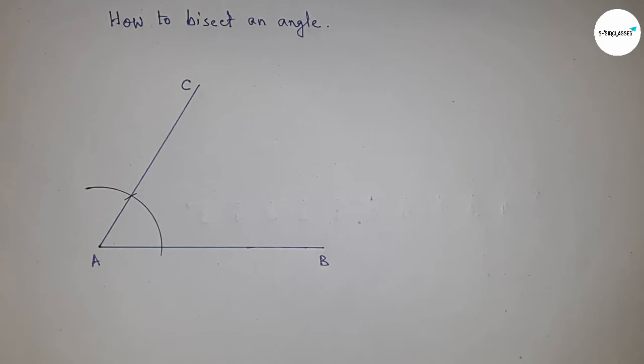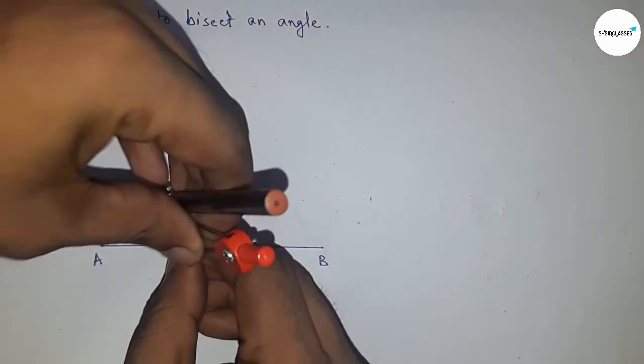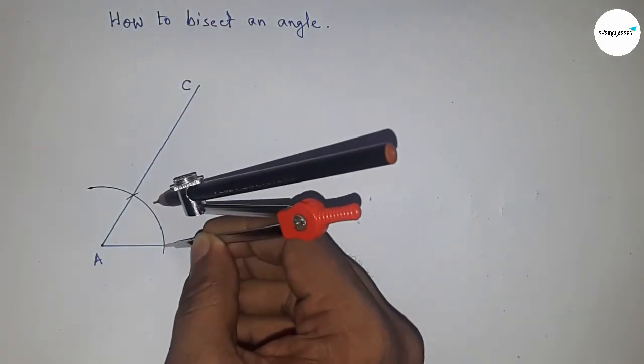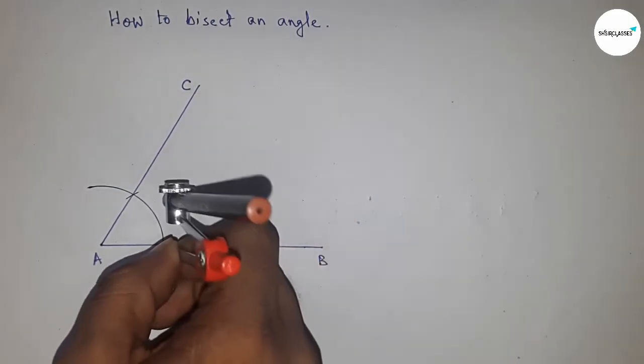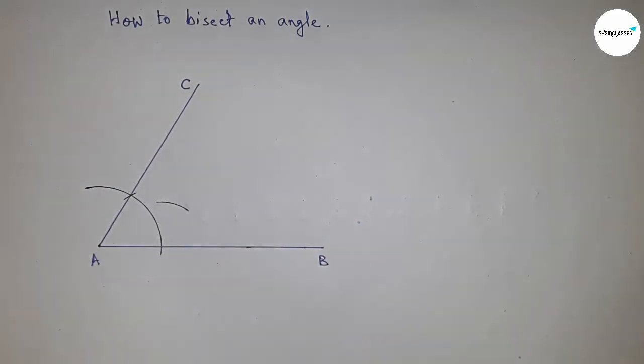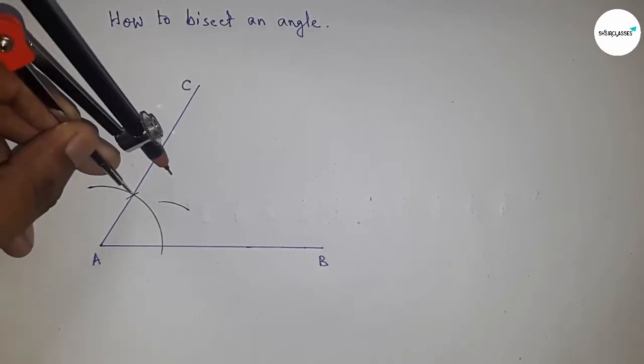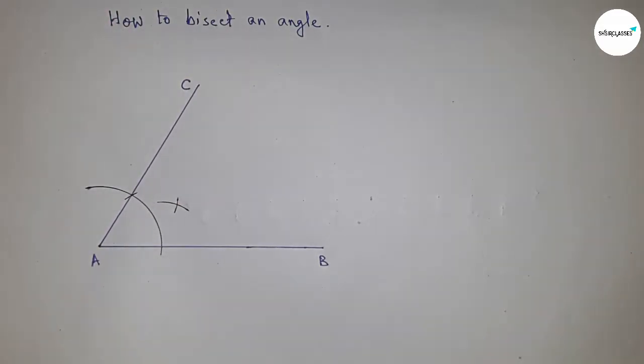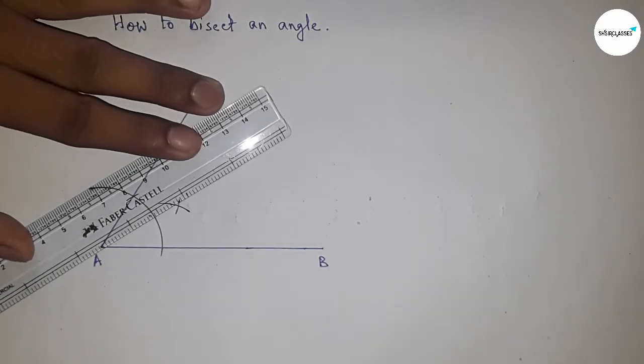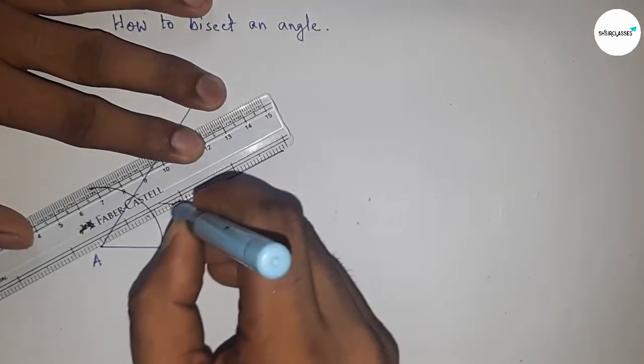Now going to bisect this angle. Taking greater than half of the length of this and drawing an arc here. With the same length, putting the compass here and cut here. Next, joining this...